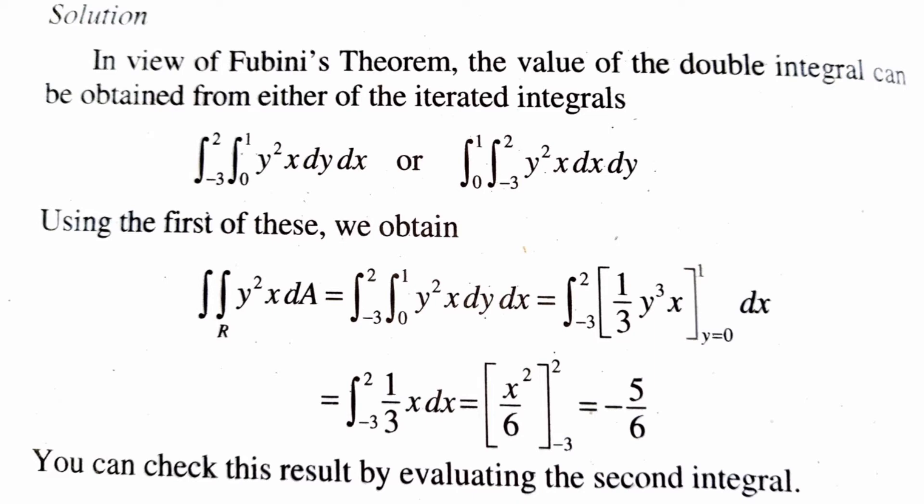First, we integrate with respect to y. Since the integral of y² is y³/3, with x held constant, we get integral -3 to 2 of [y³x/3] from 0 to 1 dx, which equals integral -3 to 2 of (1/3)x dx. That equals [x²/6] evaluated from -3 to 2, giving the final answer of -5/6.